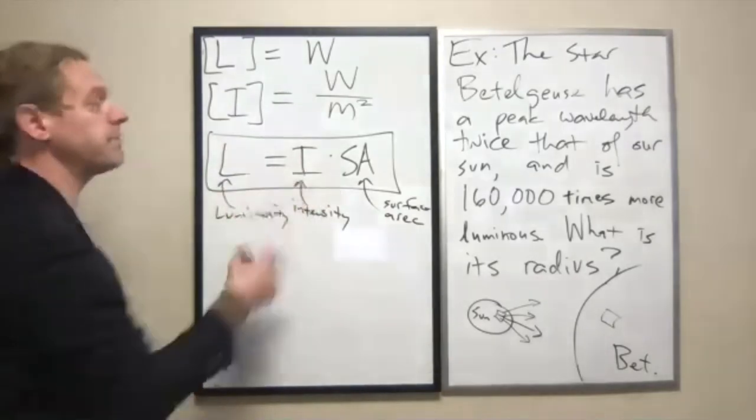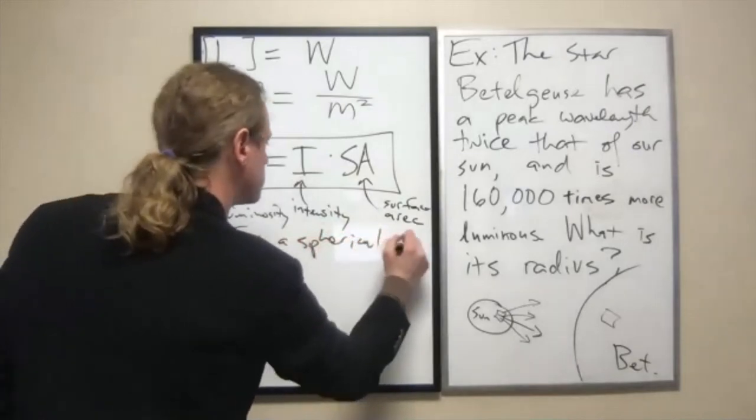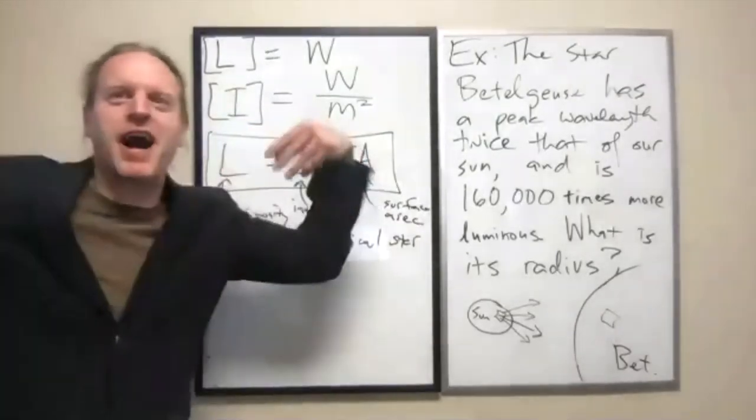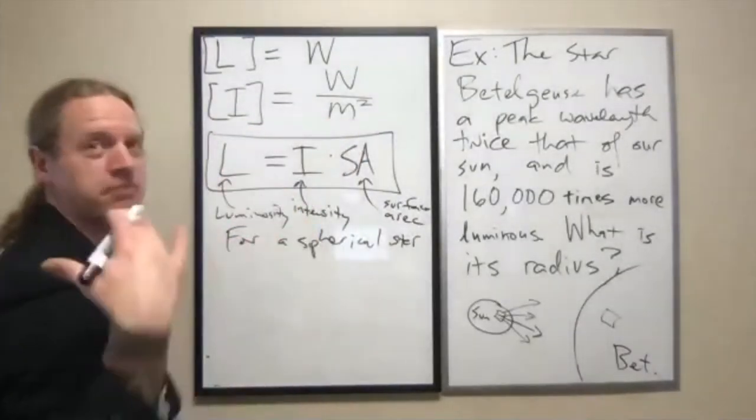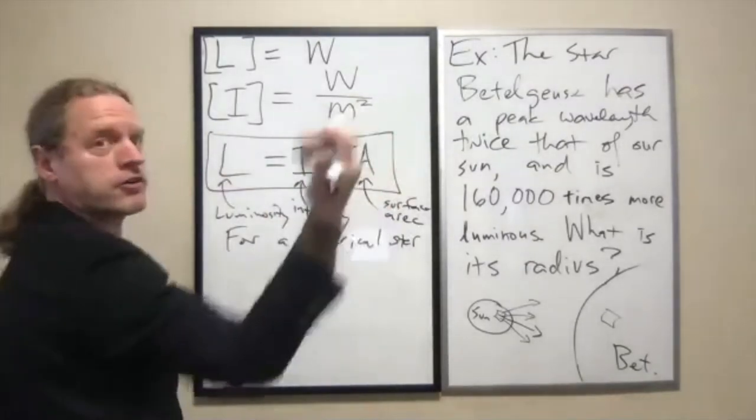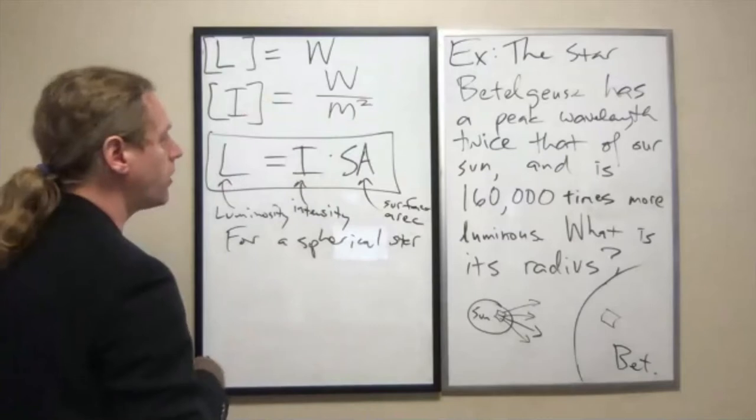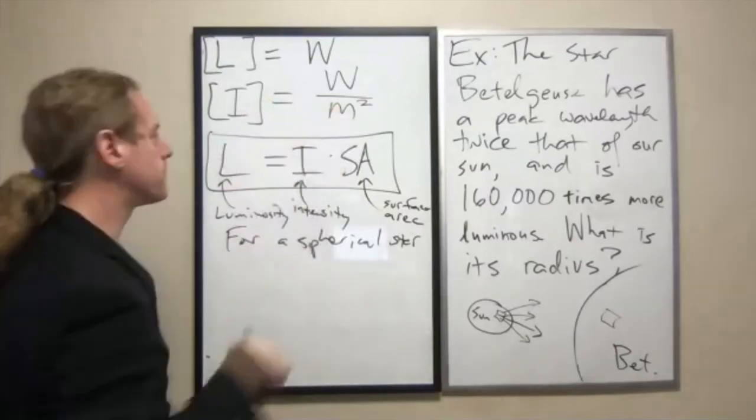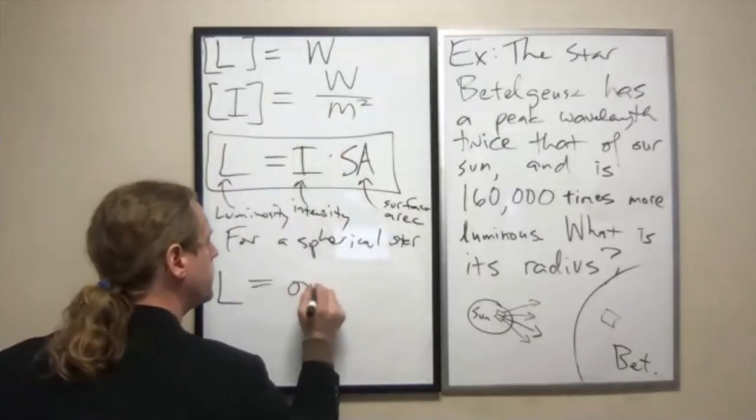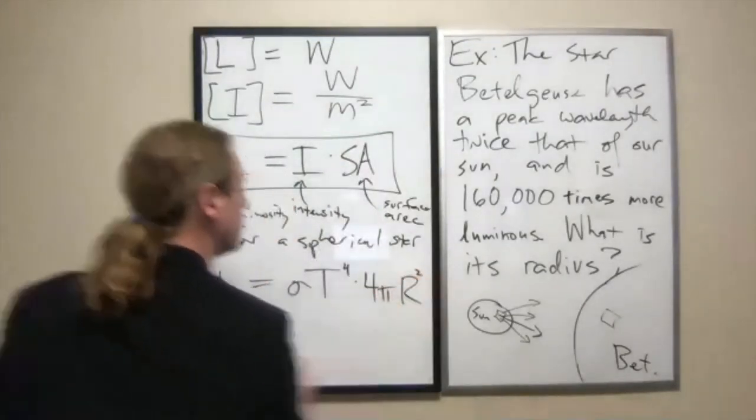So this is the direct connection between them. Now for a star, for a star that's spherical, which we don't really know of any stars that are too oblate. That's the oblong sphere. Most stars are extremely to a high degree spherical, not all. And so this is just 4 pi r squared, that's the surface area of a sphere. The intensity, we know from Stefan's law, sigma T to the fourth. Turns out, that's what the luminosity is. Stefan's law says it's sigma T to the fourth times 4 pi r squared.